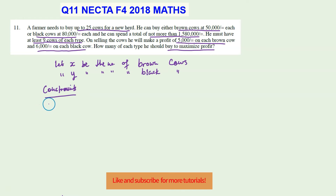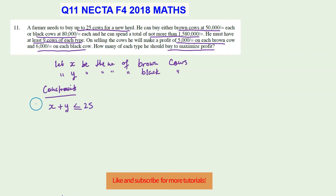The first constraint: he needs to buy up to 25 cows, so the number of brown cows plus the number of black cows cannot be more than 25. It can be less or equal, so we use the inequality symbol: x plus y is less than or equal to 25. That's the first constraint.